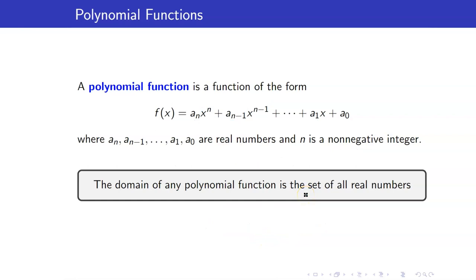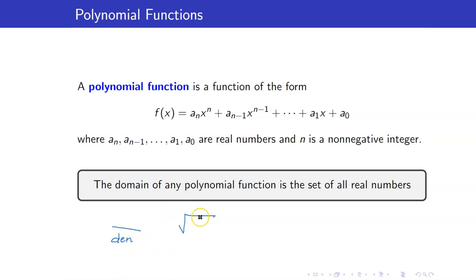Moreover, the domain of any polynomial function is the set of all real numbers. We have no restrictions, because we only have restrictions whenever you have variables appearing in the denominator, or if you have square roots or even-index radicals. But in this case, since you do not have any variable in the denominator or appearing in radical signs, then that means we have no restrictions. Hence, the domain is just the set of all real numbers.